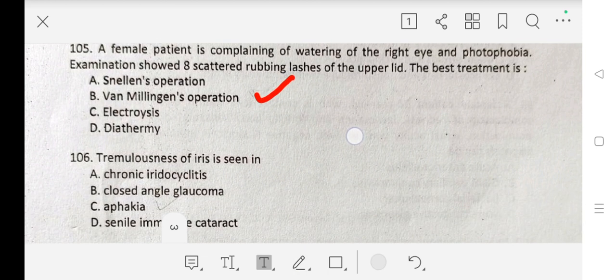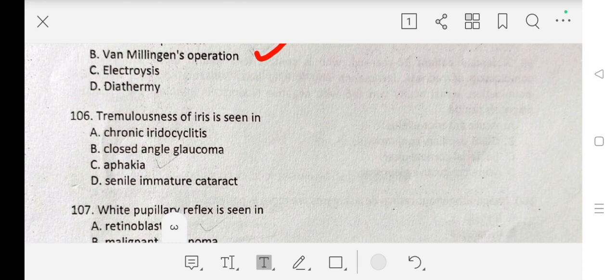Question number 106 is: Tremulousness of iris is seen in A. chronic iridocyclitis, B. closed angle glaucoma, C. aphakia, D. senile immature cataract. Our correct answer is C. aphakia.